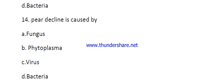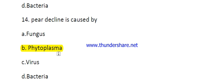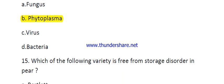Question number fourteen: pear decline is caused by fungus, phytoplasma, virus, or bacteria? The right answer is phytoplasma. This disease is transmitted through pear psylla.